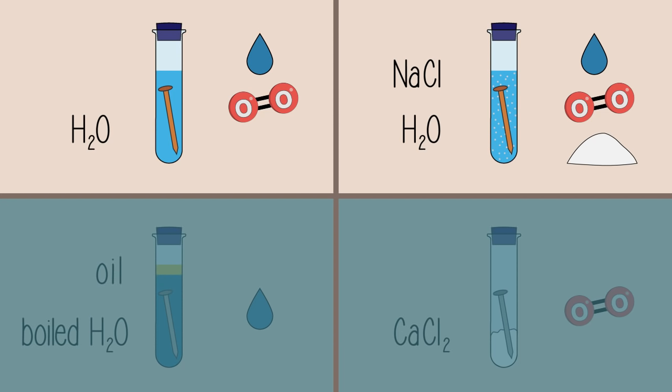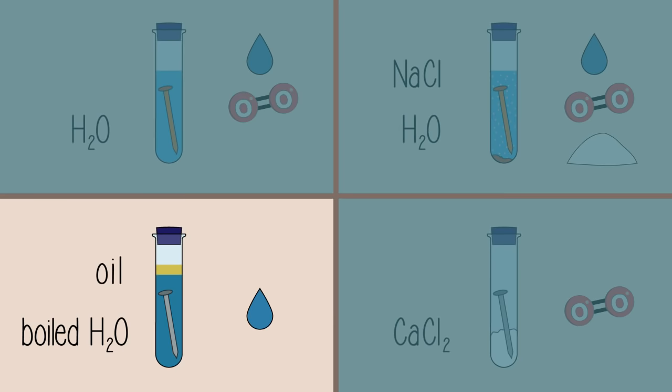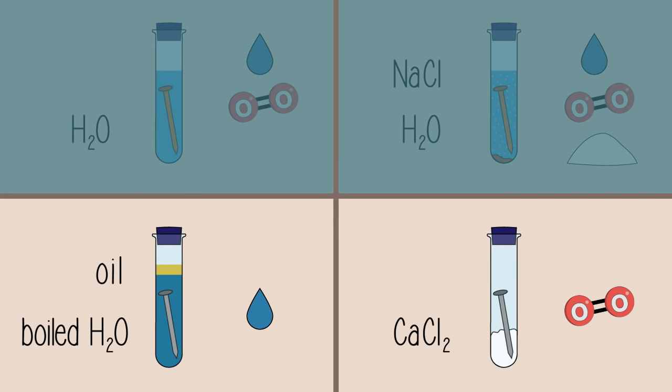the nail in the second test tube has rusted more than the nail in the first test tube, and the rust has likely flaked off. You may see a reddish-brown precipitate at the bottom of these tubes. The nails in the third and fourth test tubes have not rusted.